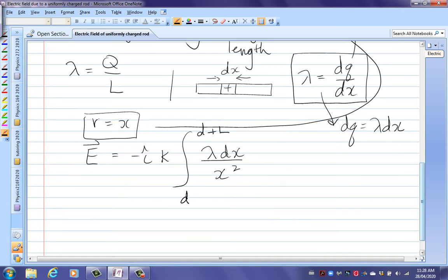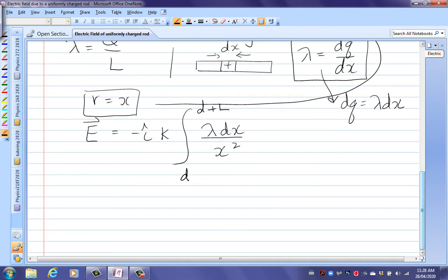The physics is done. The rest is just math. So lambda is constant. So we can bring that out. Negative i hat k lambda. And then we're just going to write that as x to the negative 2 dx. From d to d plus L. So we have negative i hat k lambda. Integrate x to the negative 2. Add 1. Divide by the new power. Put in the limits of integration.